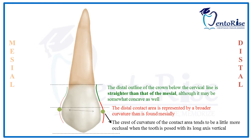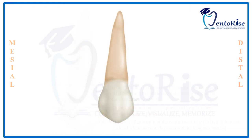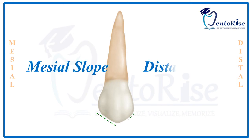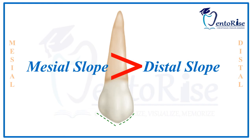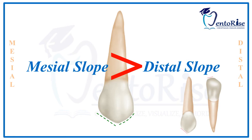The difference in the levels of the contact areas can be observed in the figure. From the buccal aspect, the cusp has two slopes: the mesial slope and the distal slope. The mesial slope of the permanent maxillary first premolar is greater in length compared to the distal slope — this is in contrast to the permanent maxillary canine, where the mesial slope is shorter than the distal slope. For the permanent maxillary first premolar, the mesial slope is straight while the distal slope is curved.